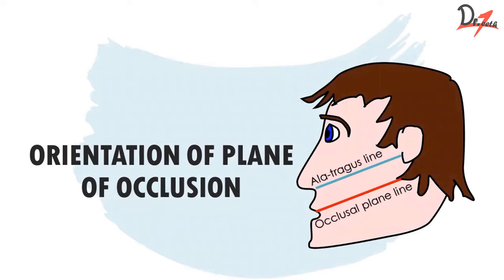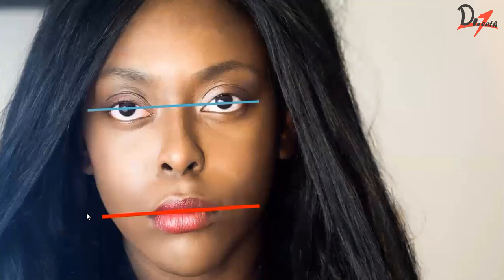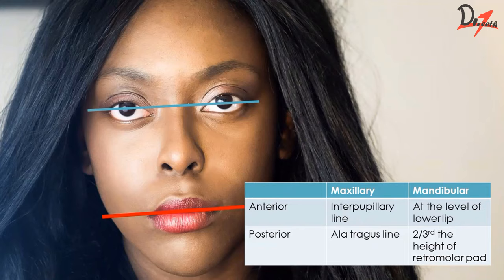For the maxillary rim, posteriorly your occlusal plane should be parallel to the ala-tragus line — that is the line from the ala of the nose to the lower border of the tragus. Anteriorly, your occlusal rim will be parallel to the interpupillary line. For the lower mandibular rim, anteriorly it will be at the plane of the lower lip and posteriorly it will be two-thirds the height of the retromolar pad.